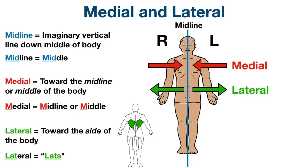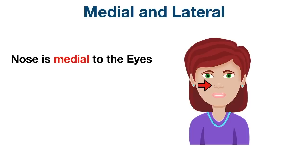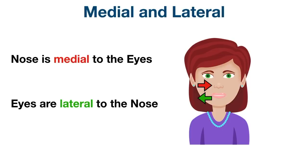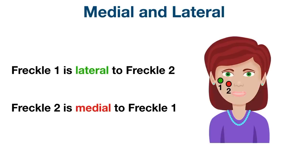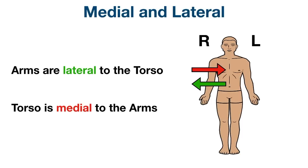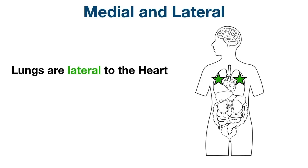Let's look at some examples of medial and lateral. The nose is medial to the eyes because the nose is more toward the midline compared to the eyes. The eyes are lateral to the nose because the eyes are more toward the side of the body. If the woman had two freckles on her face, freckle one could be described as lateral to freckle two, or freckle two is medial to freckle one. The arms are lateral to the torso and the torso is medial to the arms. For internal structures, the lungs are lateral to the heart and the heart is medial to the lungs.